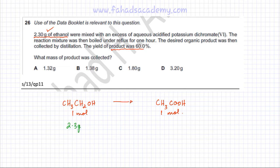If I have 2.3 grams, the moles of ethanol would be mass divided by the MR. The MR of ethanol, if you add all the carbons, hydrogens, and oxygens, comes out to be 46. Using my calculator, 2.3 divided by 46 gives me 0.05 moles.